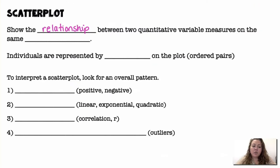A scatter plot shows the relationship between two quantitative variable measures on the same individual. Individuals are represented by dots on the plot, or ordered pairs. To interpret a scatter plot, we look for an overall pattern.